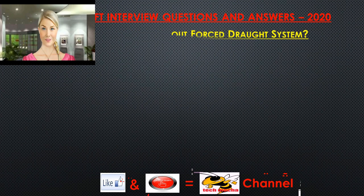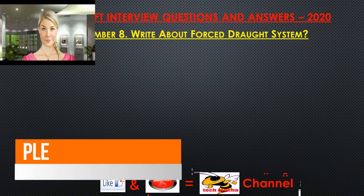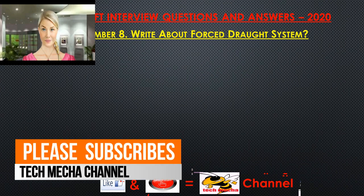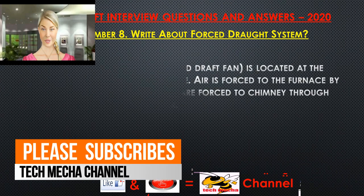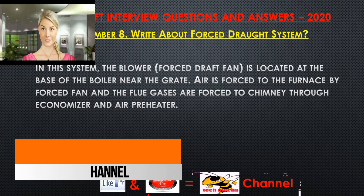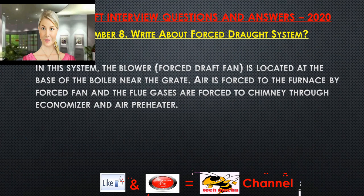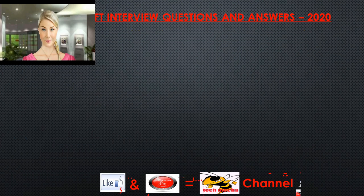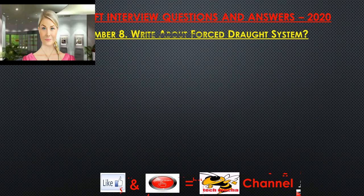Question 8: Write about the forced draft system. In this system, the blower or forced draft fan is located at the base of the boiler near the grate. Air is forced to the furnace by the forced fan, and the flue gases are forced to the chimney through the economizer and air preheater.